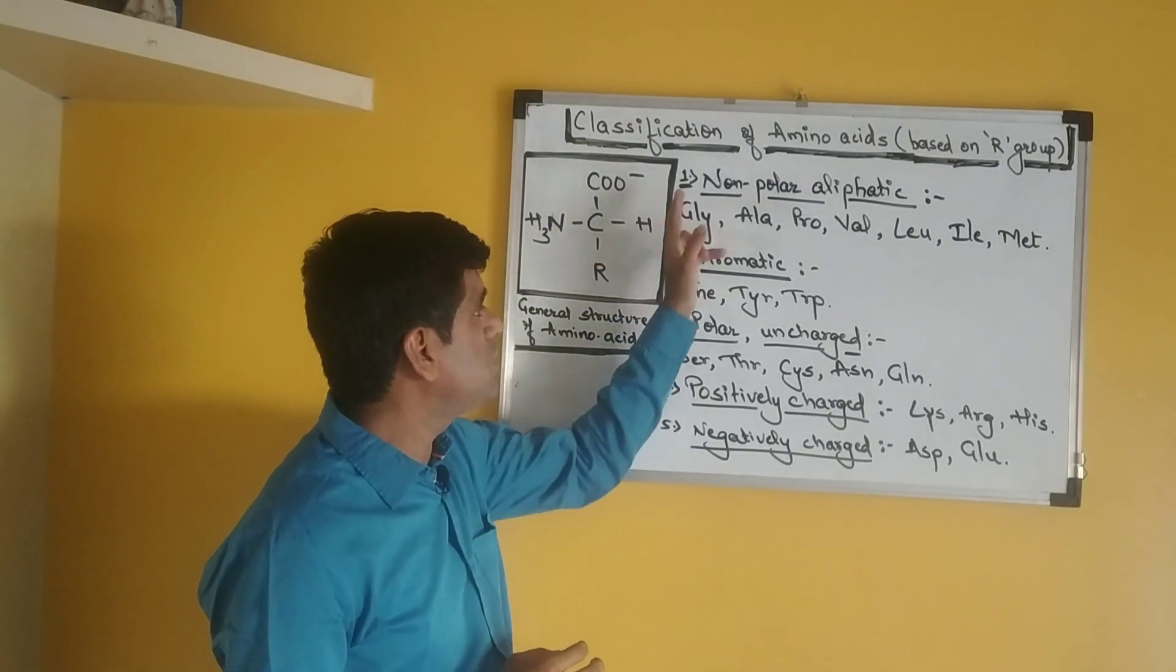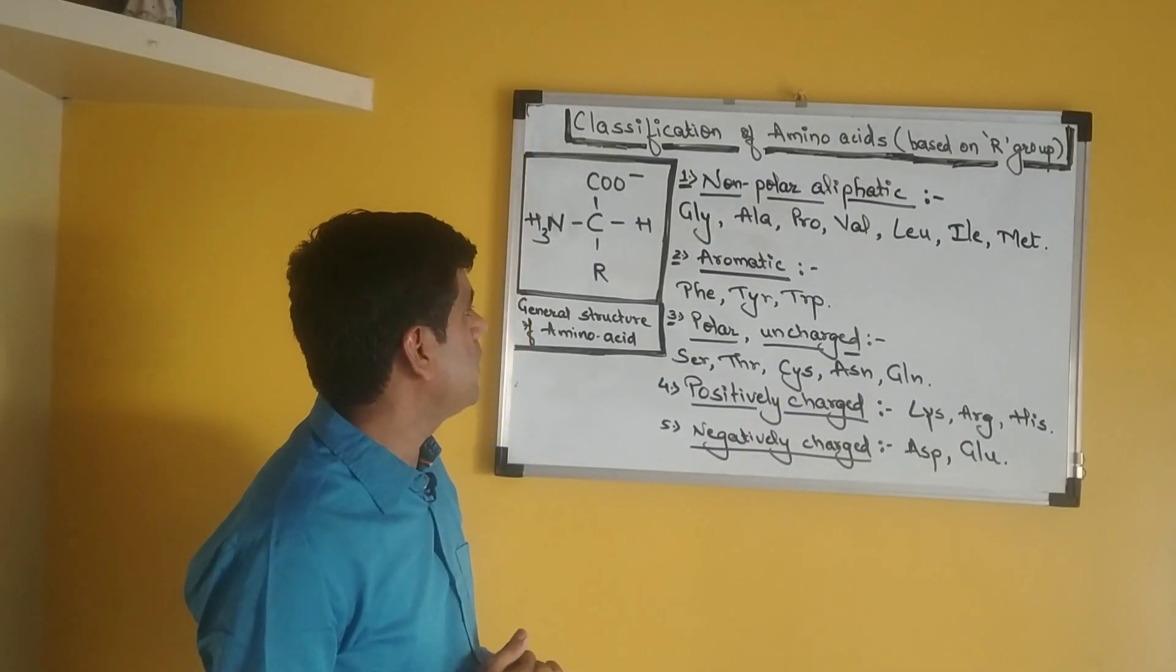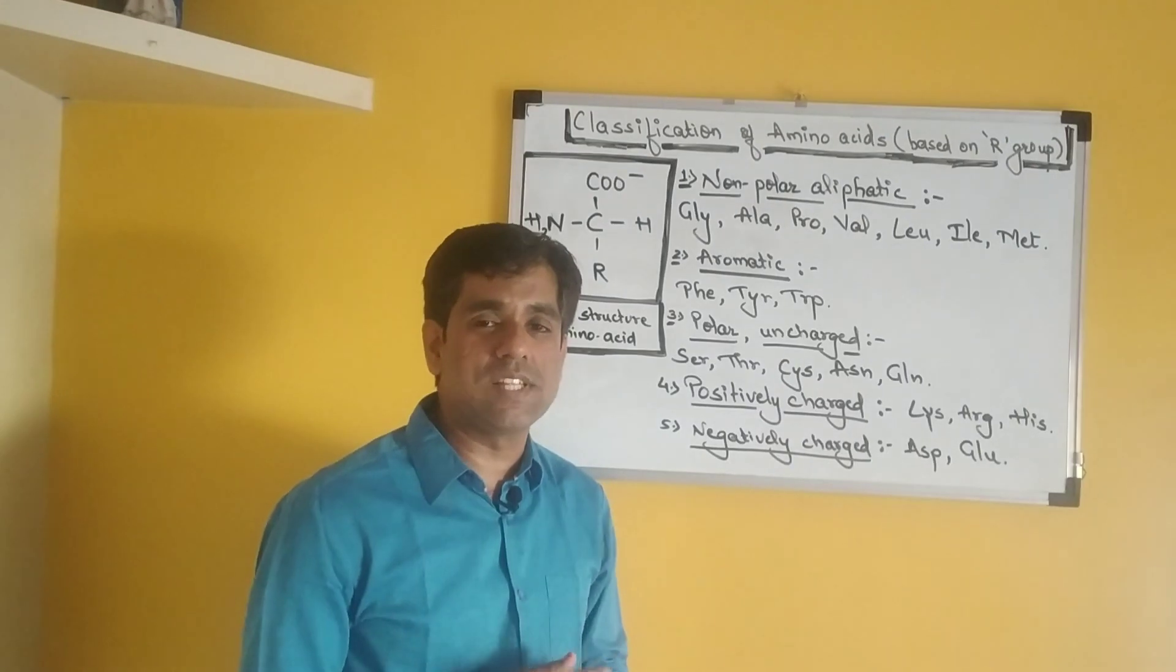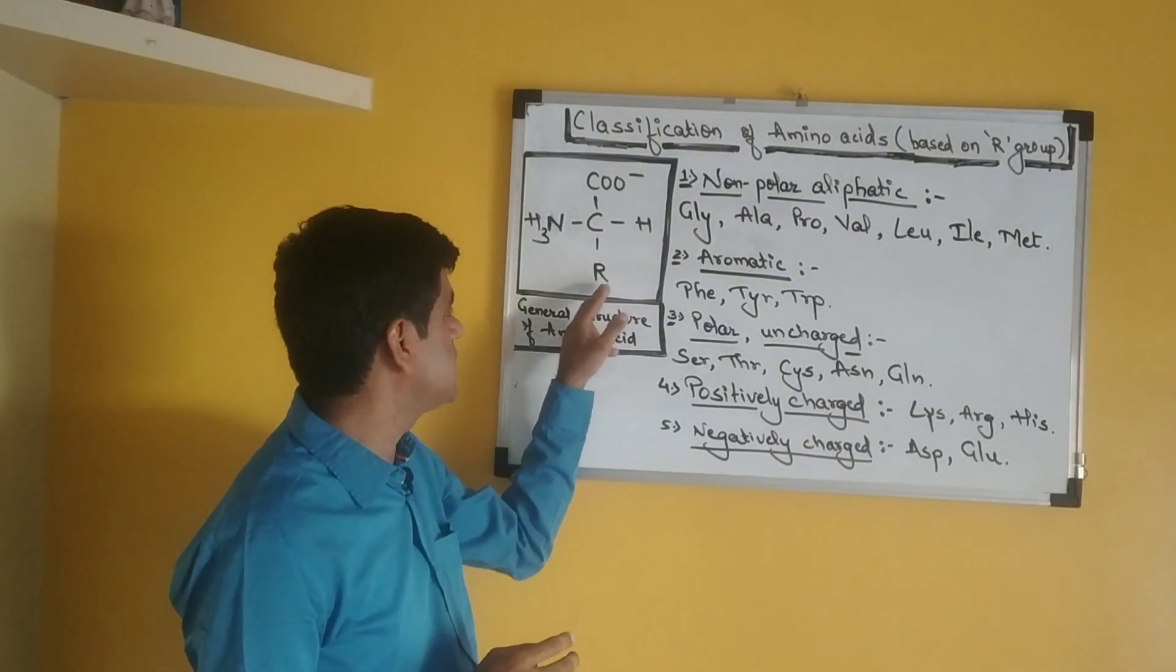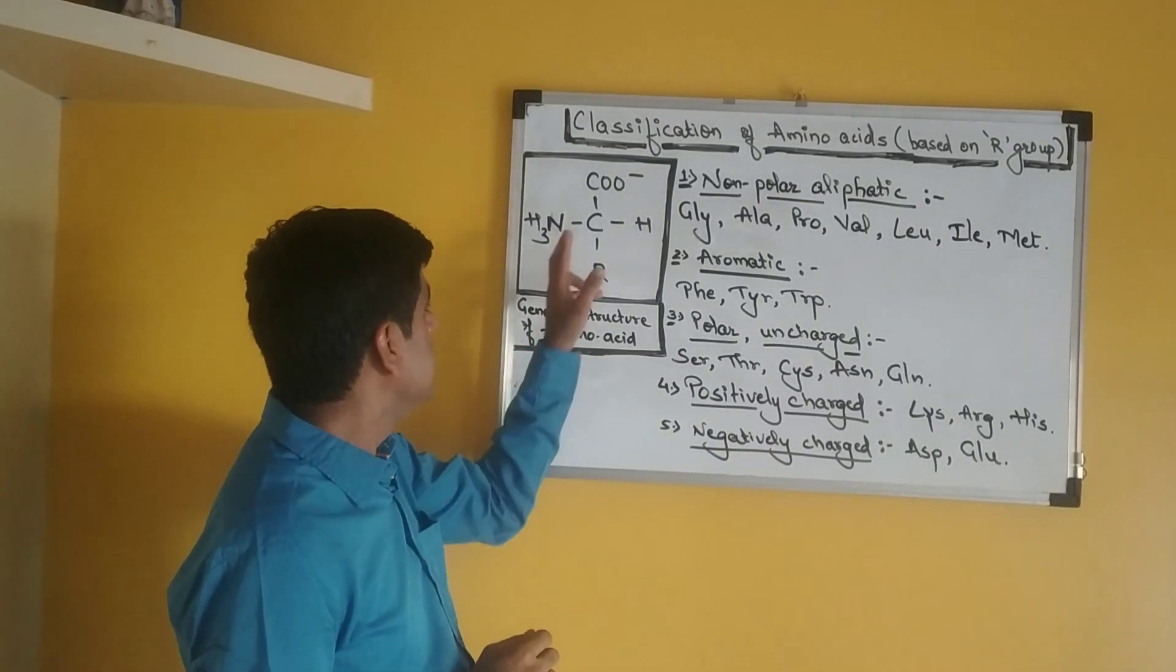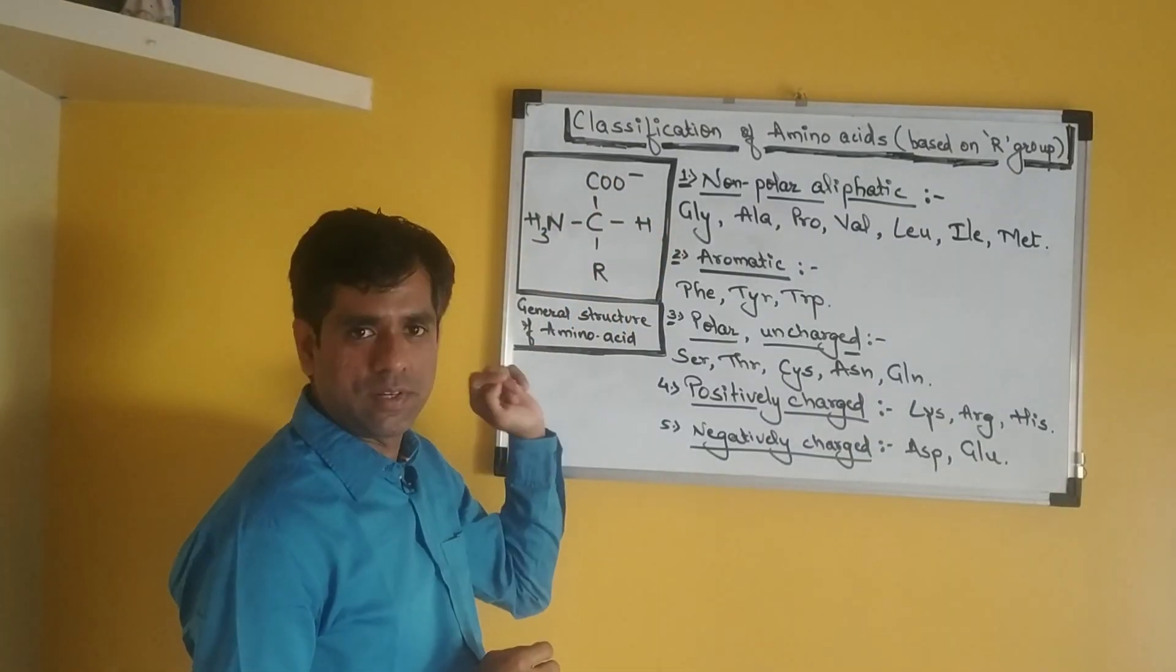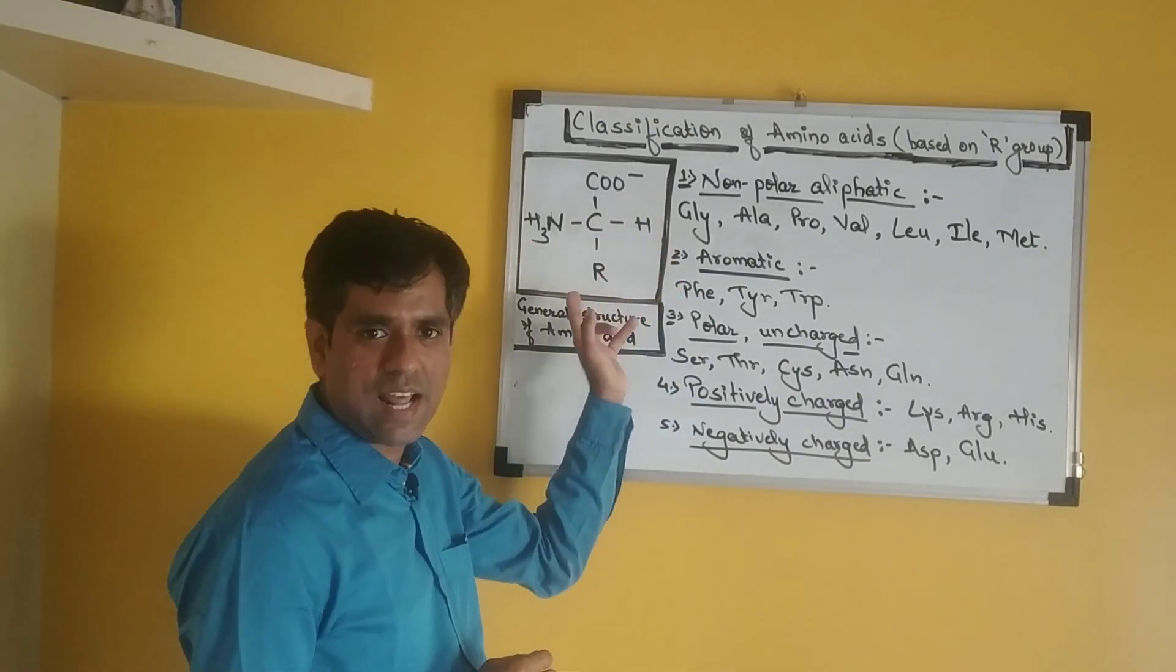The first class is that of the non-polar aliphatic amino acids. This group includes amino acids like glycine. Glycine is popular as one of the simplest amino acids because it has H instead of R. Glycine also we refer to as optically inactive because all other amino acids have a chiral carbon atom with four different groups attached to it. Glycine is an exception because it has two similar hydrogens attached.